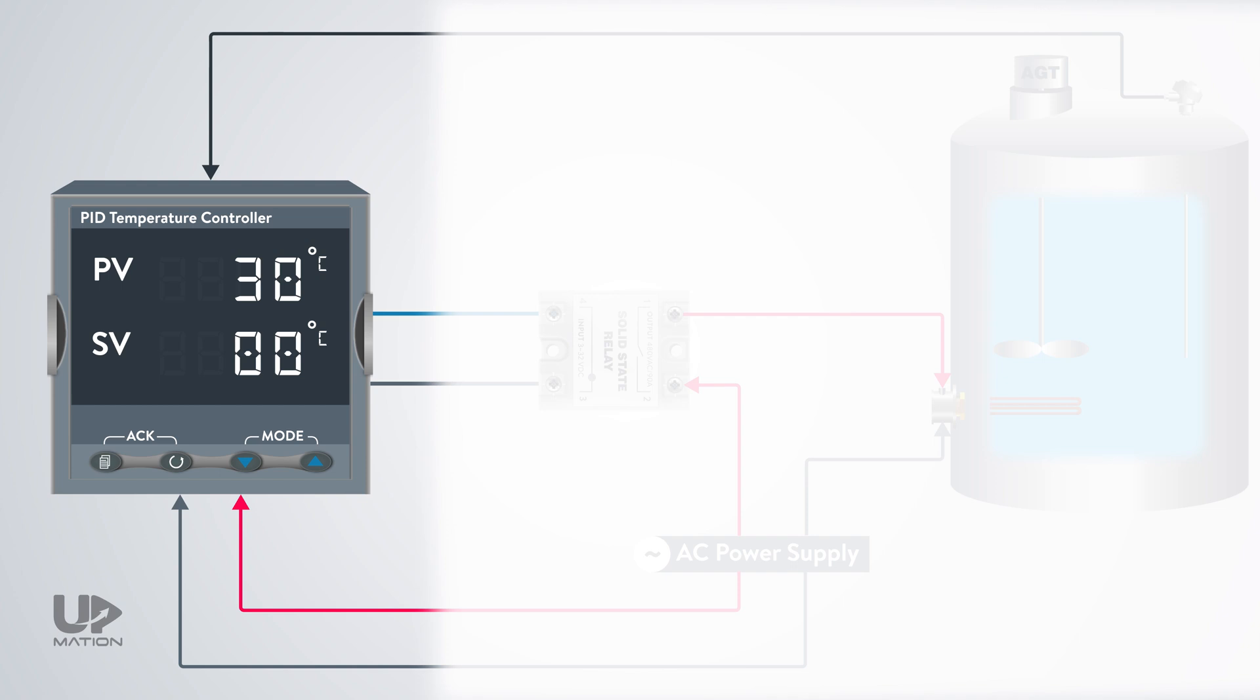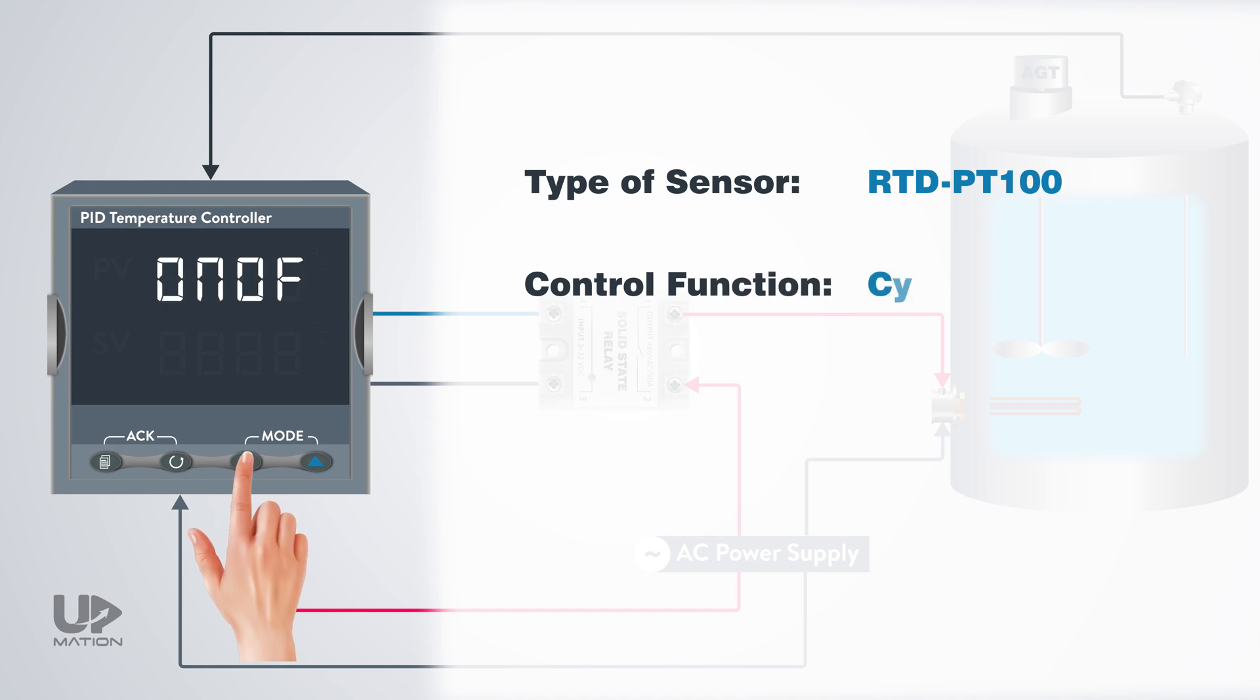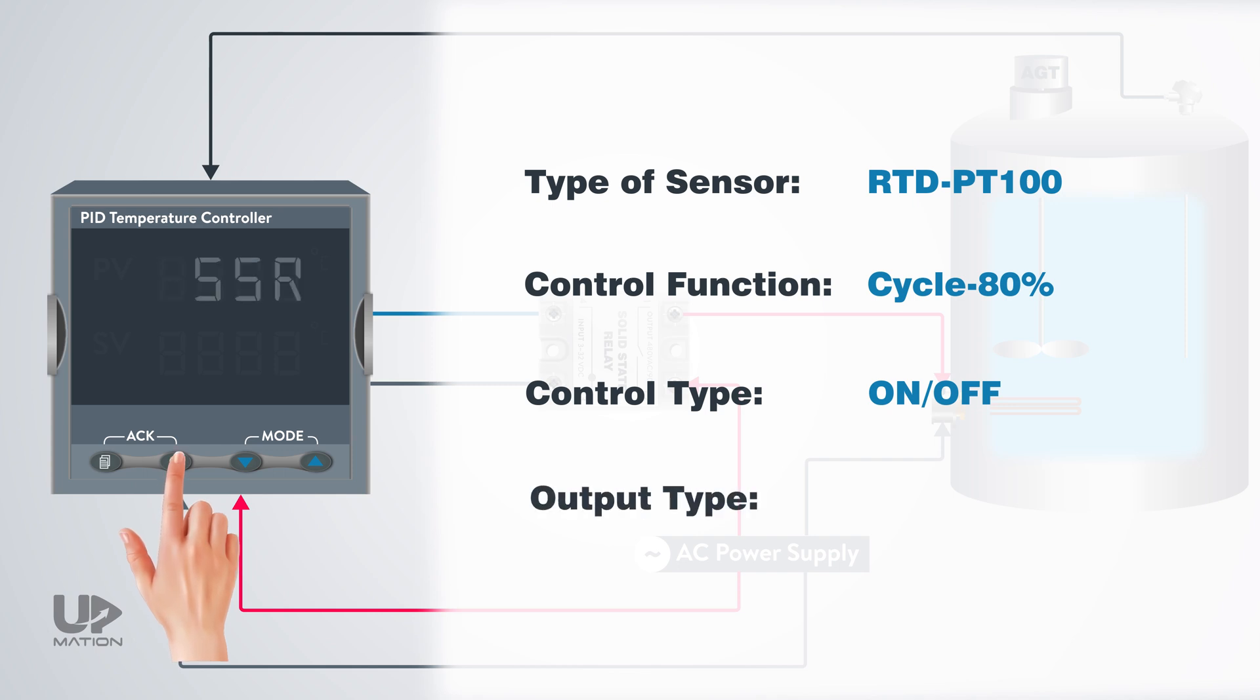Now, assume that we have applied all of our desired settings and functions in our PID controller. I've selected the appropriate type of sensor, the cycle control function with the cycle set to 80% without a PID control, a 10% of hysteresis and so on. Let's see what will happen to our process.